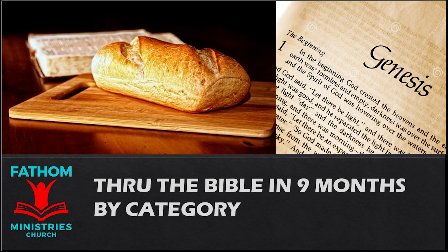The breadth of the court on the front of the east shall be fifty cubits. The hangings for the one side of the gate shall be fifteen cubits with their three pillars and three bases. On the other side the hangings shall be fifteen cubits with their three pillars and three bases. For the gate of the court there shall be a screen twenty cubits long of blue and purple and scarlet yarns and fine twined linen embroidered with needlework. It shall have four pillars and with them four bases. All the pillars around the court shall be filleted with silver. Their hooks shall be of silver and their bases of bronze. The length of the court shall be a hundred cubits, the breadth fifty, and the height five cubits. With hangings of fine twined linen and bases of bronze, all the utensils of the tabernacle for every use, and all its pegs, and all the pegs of the court shall be of bronze.